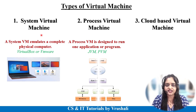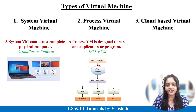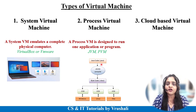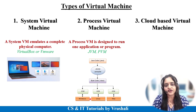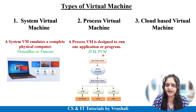The next type is a process virtual machine, designed to run a single application or program. For example, when you execute a Java program, it doesn't directly execute on your operating system — instead it uses the JVM, that is the Java Virtual Machine. The JVM converts your Java code into machine-understandable binary language only at the time of execution. This is called a process virtual machine. JVM and PVM (Python Virtual Machine) are the best examples.